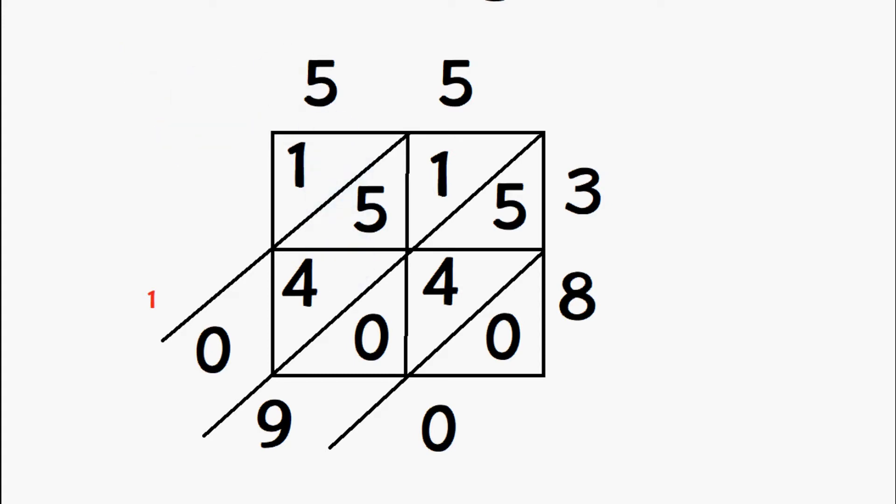So that's 0, carry the 1 forward, and then we have our final 1 here, so let's add that with this 1 which we carried forward, so we have 2.